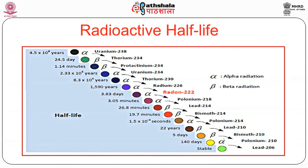This picture shows radioactive half-life — how uranium-238 decays to lead-206 through various alpha and beta decays over timescales ranging from 10⁵ years down to 10¹ years, and finally arrives at lead-206. This is how we typically define radioactive half-life through a decay chain.